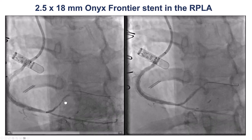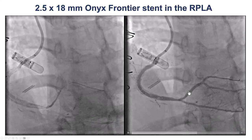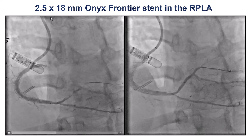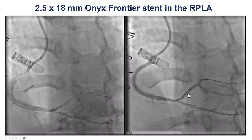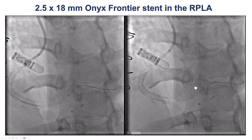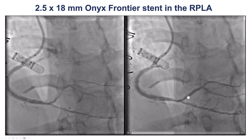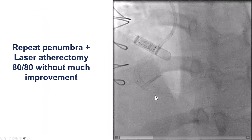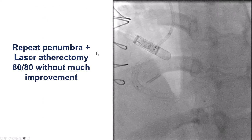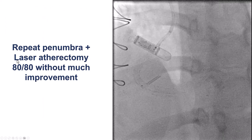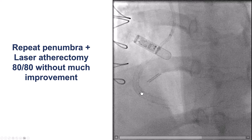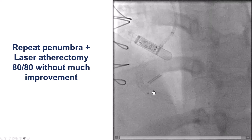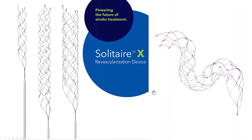There was still poor flow into the posterolateral. An area appeared to be more of a lesion, so we placed a 2.5 by 18 millimeter drug-eluting stent, which restored good flow into the right posterolateral. But we still had the filling defect in the distal RCA. We did more Penumbra aspiration and also laser, since laser can sometimes burn and vaporize thrombus — unfortunately it did not work in this particular case.